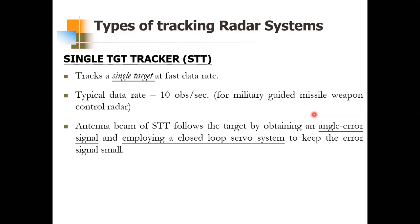I also showed you a block diagram for this. The angle error is the error between the direction of the radiation beam sent by the radar and the direction of the target — that is the true position of the target. If there is a difference between these two, we have an angle error, which shouldn't ideally be there.